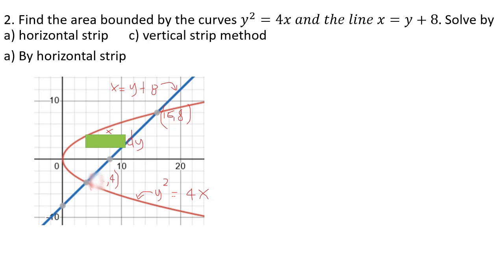Find the area bounded by the parabola y² = 4x and the line x = y + 8, solving by (A) horizontal strip and (B) vertical strip. First, solve for the intersections.